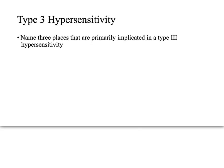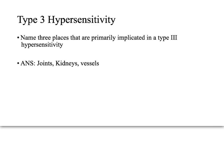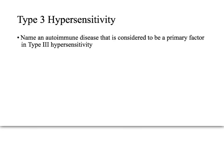Type 3 hypersensitivity quiz: Name three places primarily implicated in a type 3 hypersensitivity. The answers are the joints, kidneys, and vessels. Name an autoimmune disease considered a primary factor in type 3 hypersensitivity. The answer is lupus.